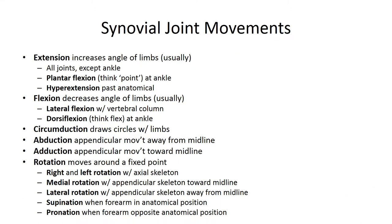Many different types of movements are allowed at synovial joints. Extension is an angular movement within the anterior-posterior plane that increases the angle between the articulating elements, such as lowering a dumbbell back to a starting position. Plantarflexion extends the ankle and elevates the heel, like when you point your toes. Hyperextension is an angular movement where the body part is extended past the anatomical position, like when you look up at the stars.